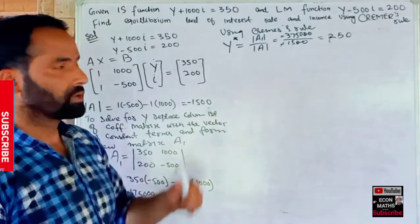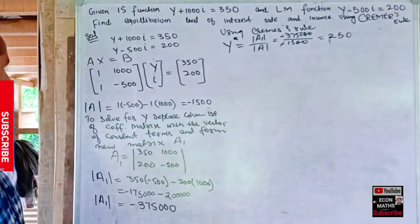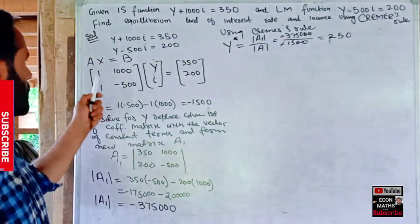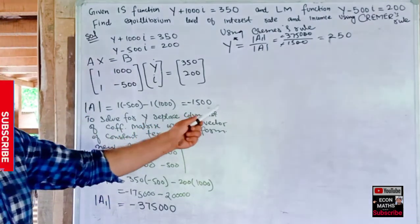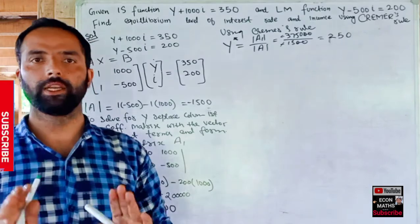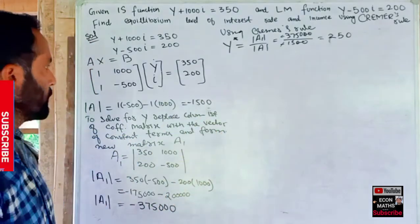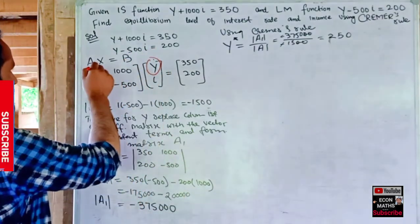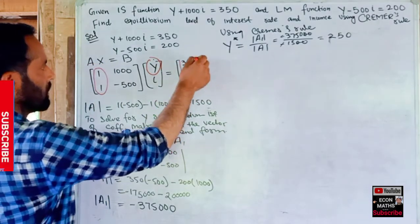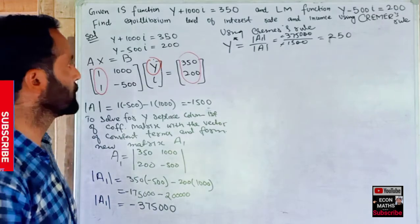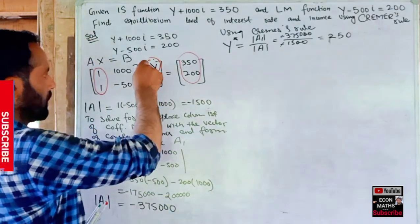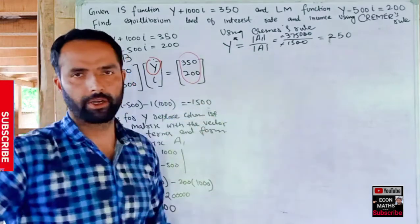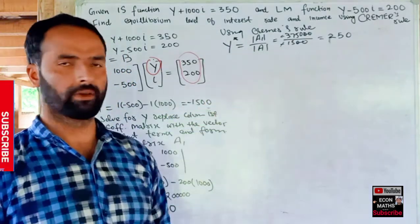To recap: when using Cramer's rule, we first express the system of equations in matrix form. We then take the determinant of the coefficient matrix (−1500 here). To solve for Y, we form a new determinant by replacing the first column with the vector of constant terms. Y equals det(A1) divided by det(A), giving us the equilibrium income.